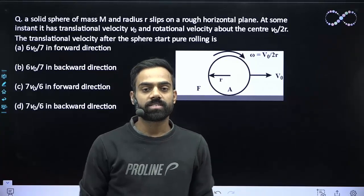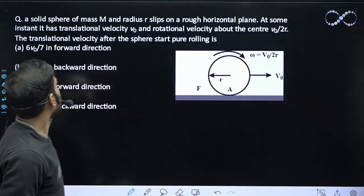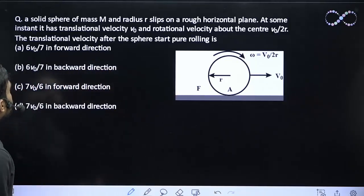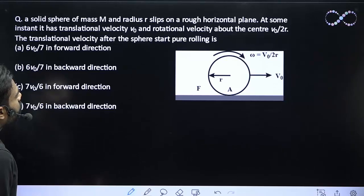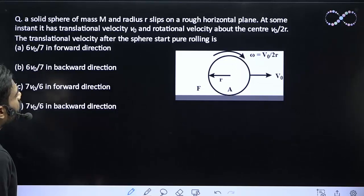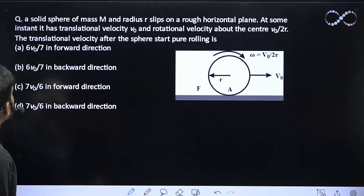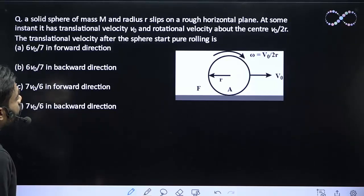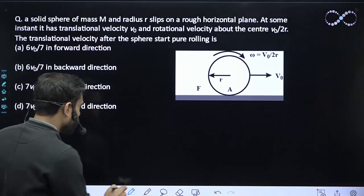Hello students! Let us see this question. A solid sphere of mass m and radius r slips on a rough horizontal plane. At some instant, it has translation velocity v0. Rotational velocity about the center is given as ω. The translation velocity after the sphere starts pure rolling is — let us solve this.